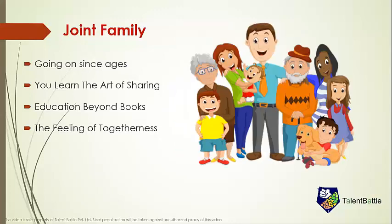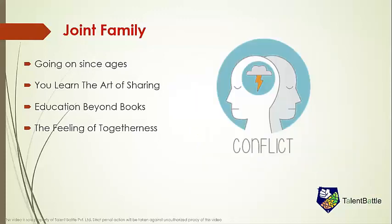The Feeling of Togetherness: joint family creates an emotional bond between two generations and helps to keep the family united in all situations. The tradition and culture is passed on to the coming generations so they can take it forward. The proverb 'united we stand and divided we fall' goes true in the joint family system. The Possibility of Conflicts: as many people live together, the chances of conflicts over values are more. Even a small decision has to get a green signal from every member of the family, especially the head of the family. This, in a way, invades privacy.